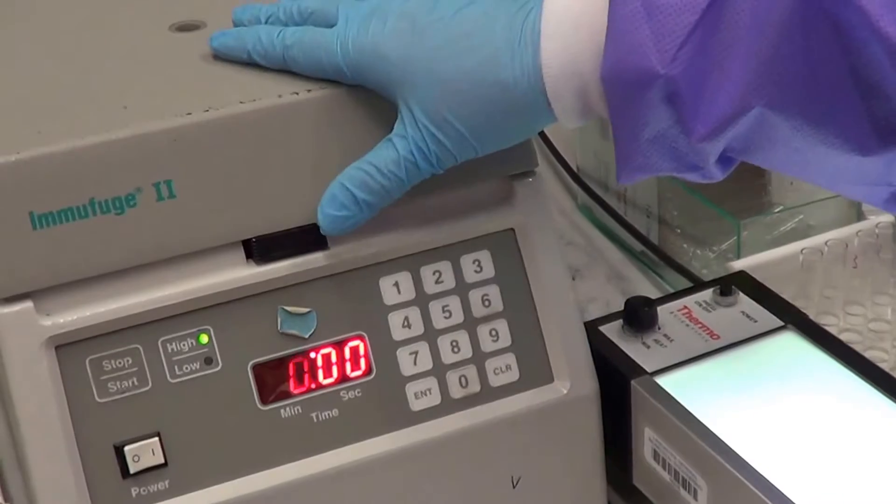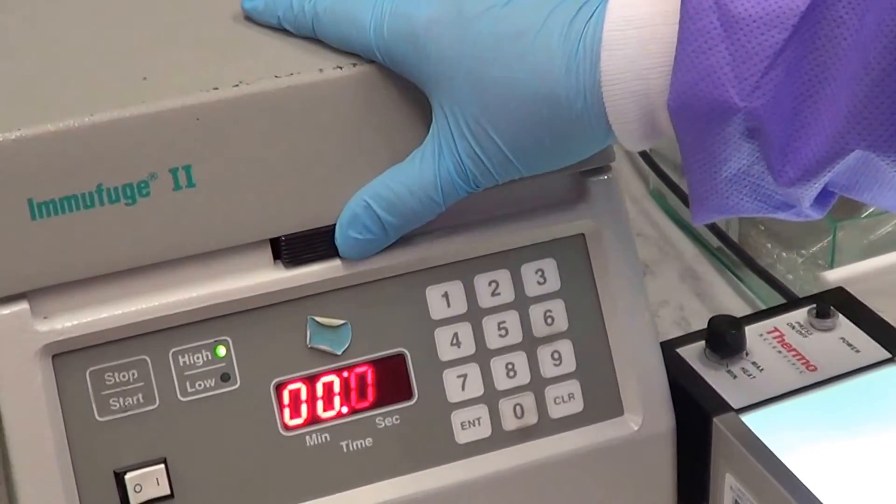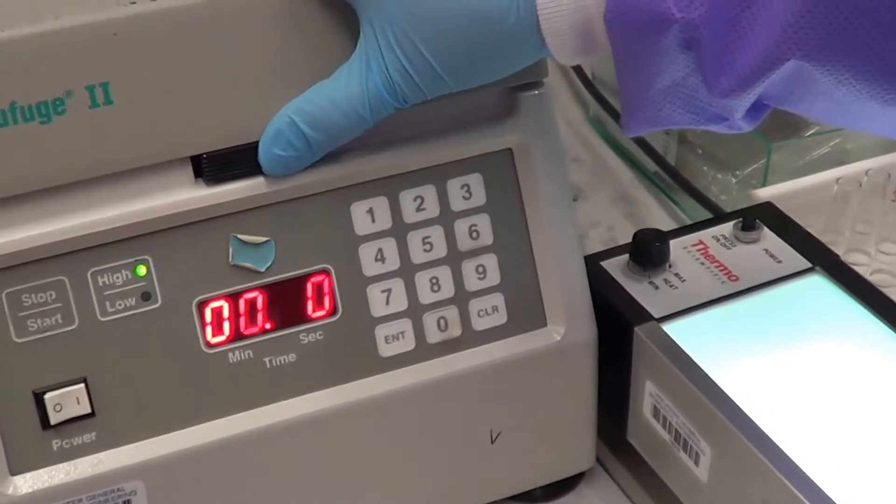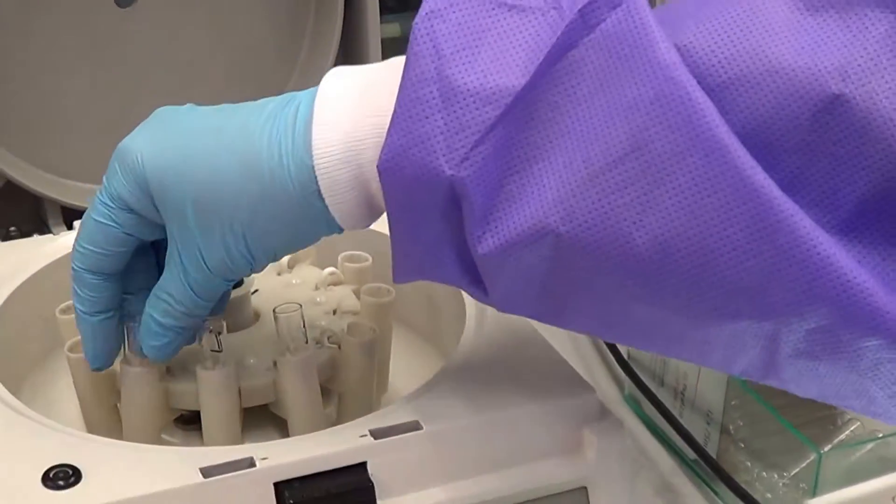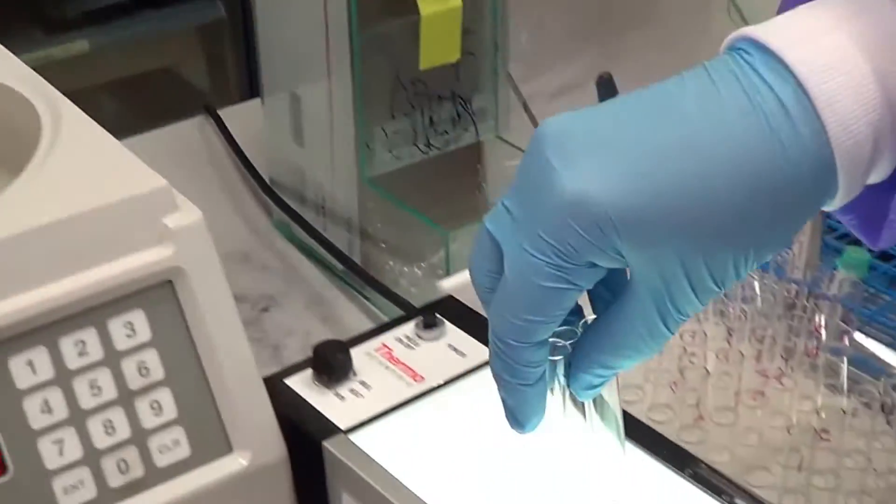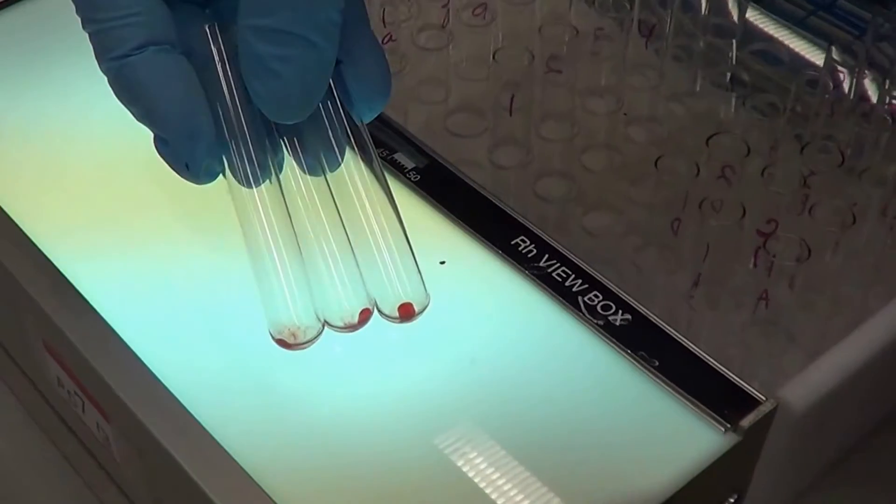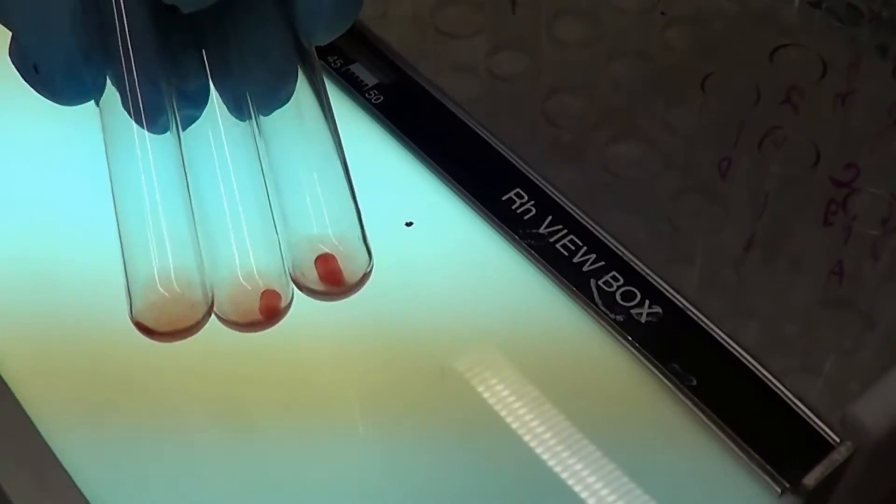Remove the test tubes from the centrifuge and we are going to re-suspend the cell button looking for agglutination. Just hold them so I can see the cell button. Now you gently re-suspend looking for agglutination.